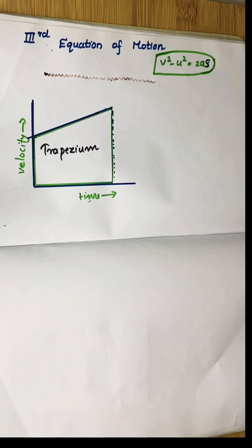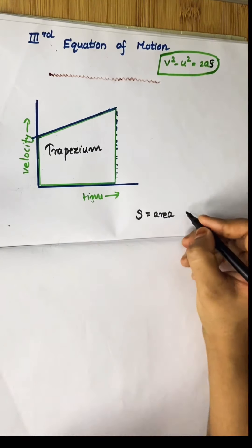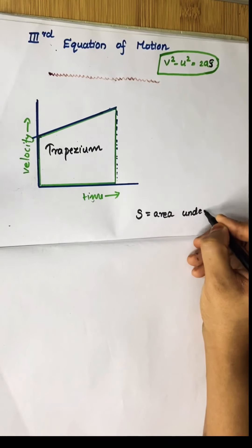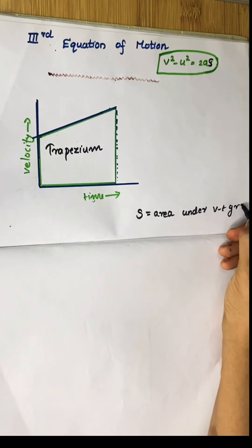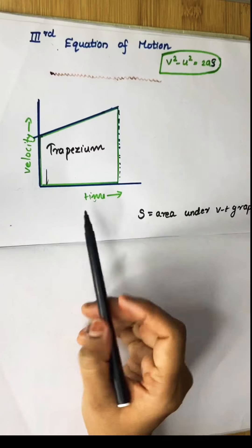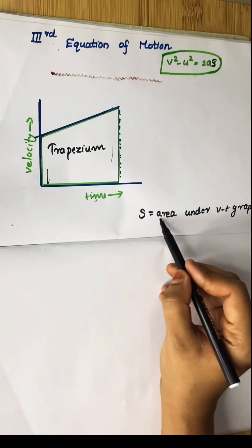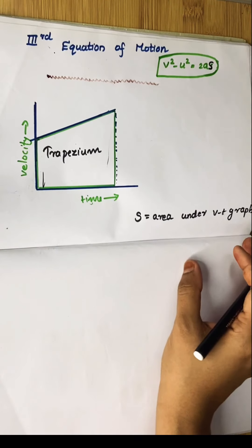How do we find this distance from a velocity-time graph of uniform acceleration? The area under the graph represents the distance covered by the object. So s equals the area under the v-t graph. The shape we see here is a trapezium.